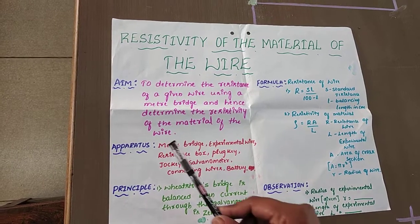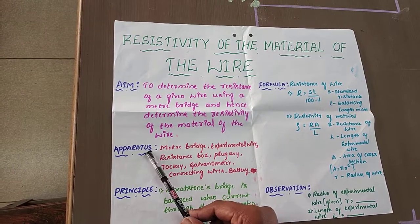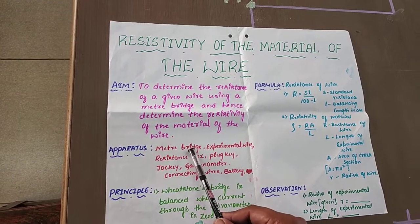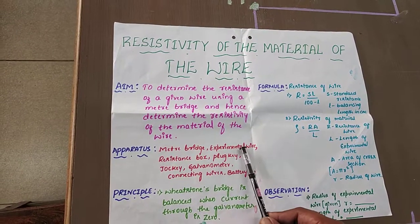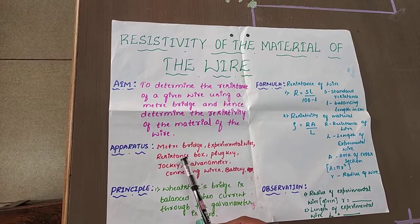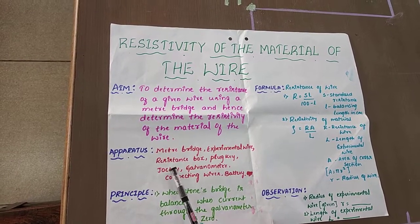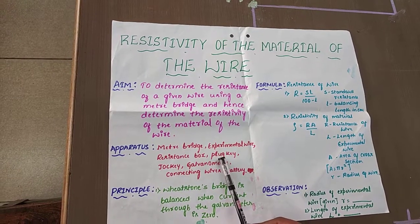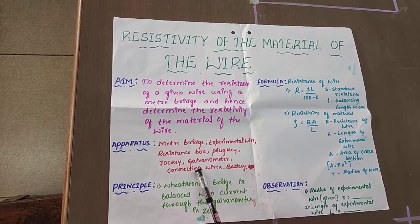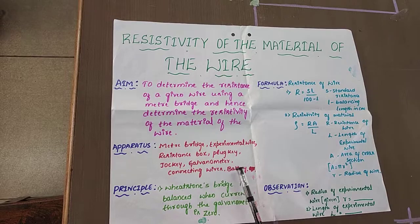Apparatus required for this experiment: meter bridge, experimental wire, resistance box, plug key, jockey, galvanometer, connecting wires, and battery.